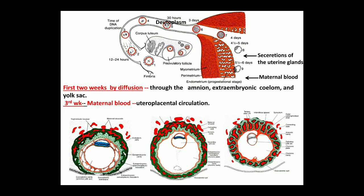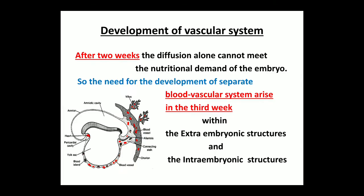In the initial first two weeks, the embryo receives its nutrition by diffusion, and after the second week this is not sufficient. So placental circulation starts, and in the embryo and in the extra-embryonic structures blood vessels start to form.